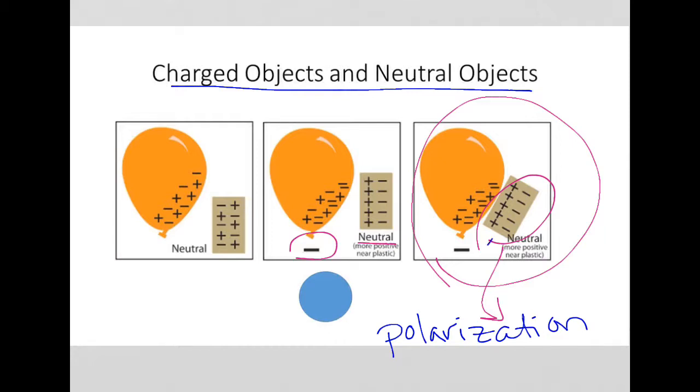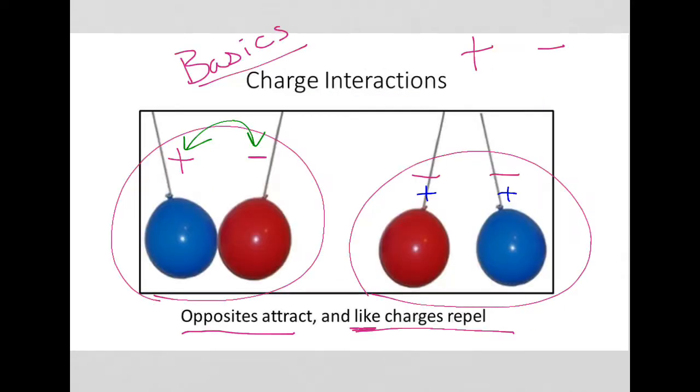The charges are separated to opposite poles, like a positive pole and a negative pole, or a north or south pole of a magnet. So the object is still neutral, but portions are more positive or more negative than others. And so charged objects and neutral objects will be attracted to each other, which brings us back to this slide.